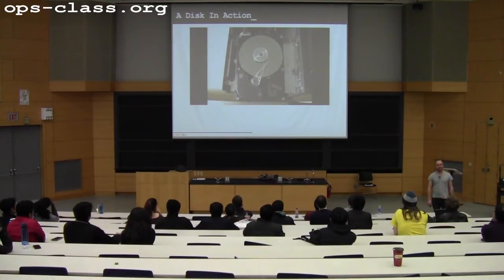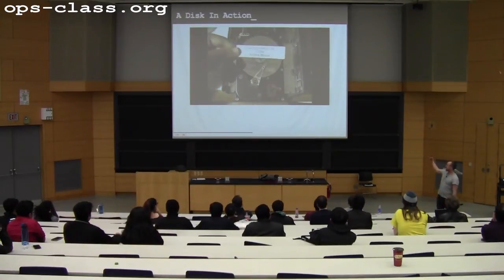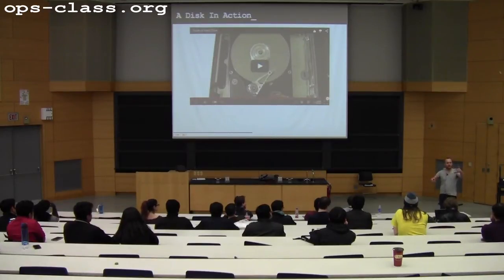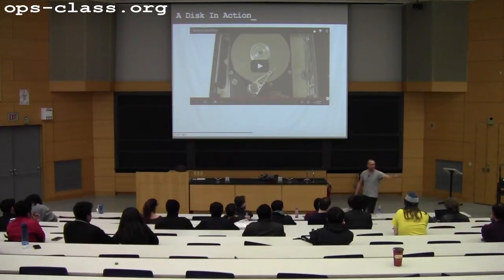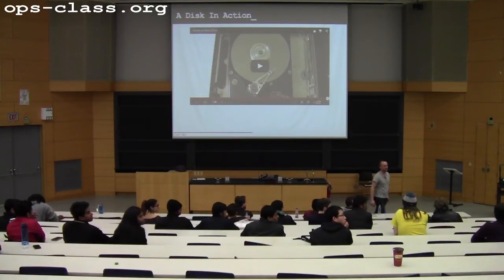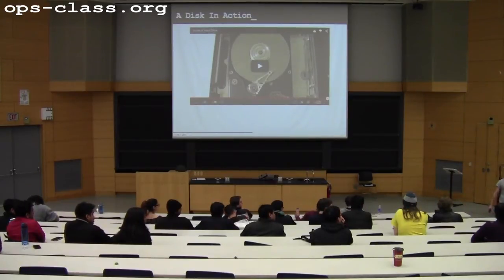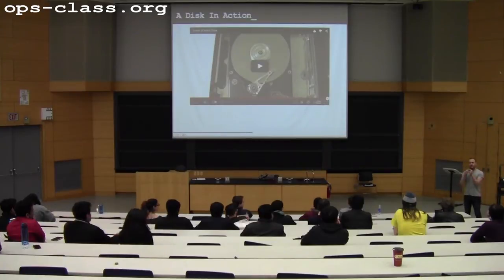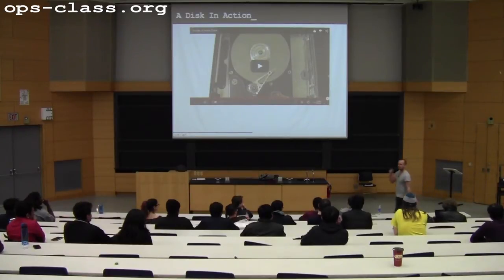Any questions about this? You can't see it, but this disk maybe has eight or ten platters, and that arm looks like a comb — sliding in and out of the gaps between all the platters. On this disk and most disks — 99.9% — the arms are all synchronized. It's one arm. That means the heads are always at the same location on every platter. That's why the cylinder is so interesting — it's all the data I can read and write without moving the heads, from every platter.